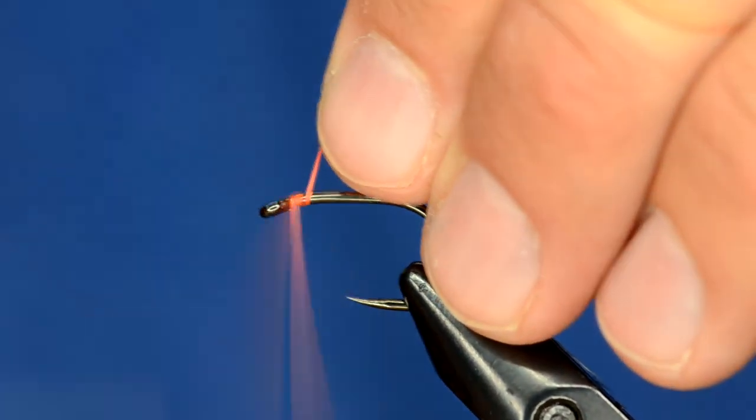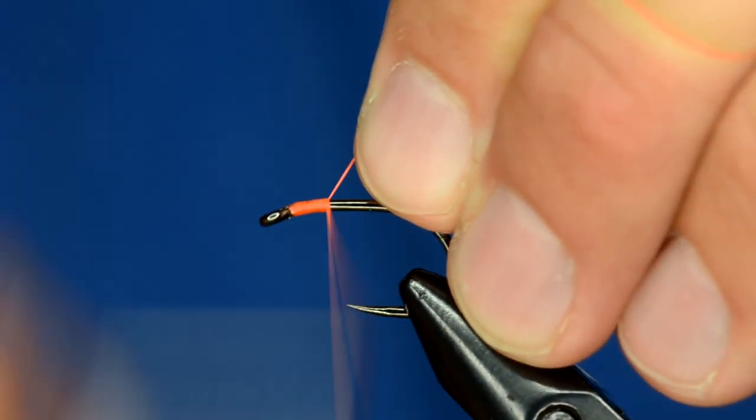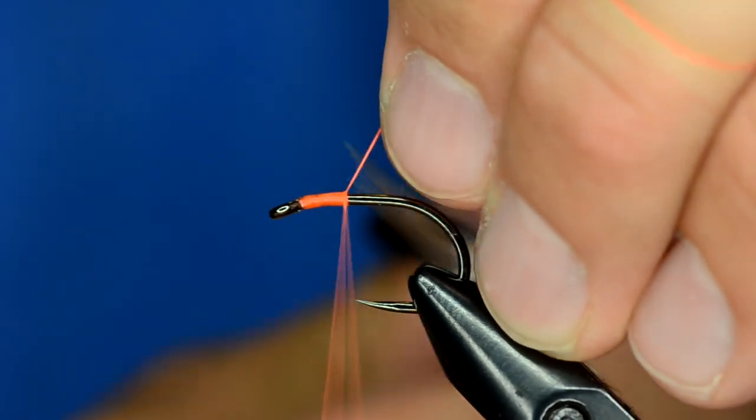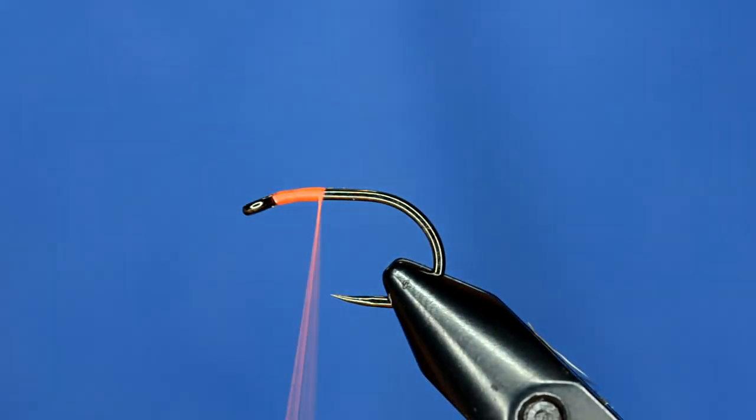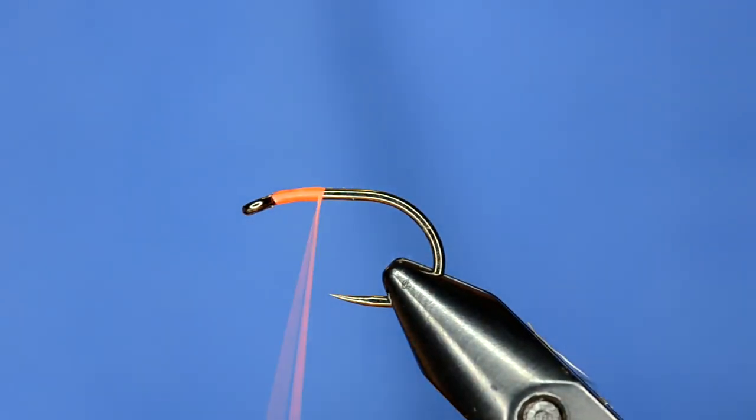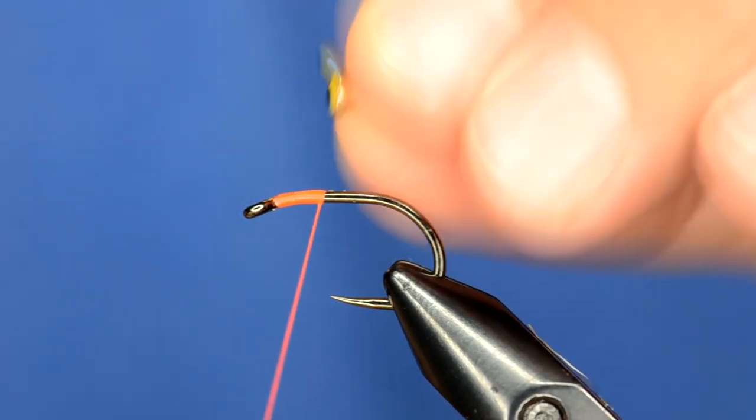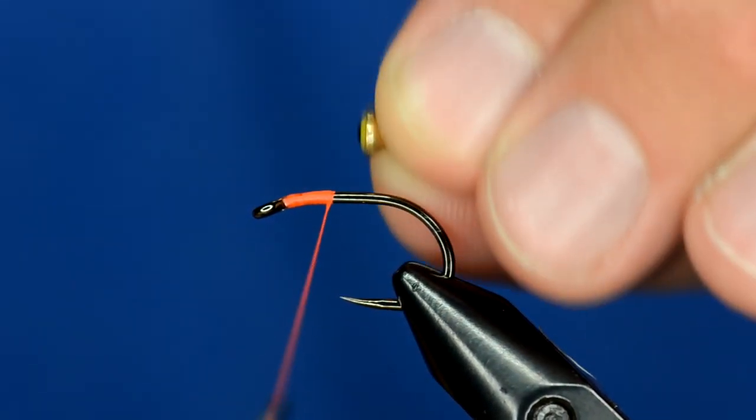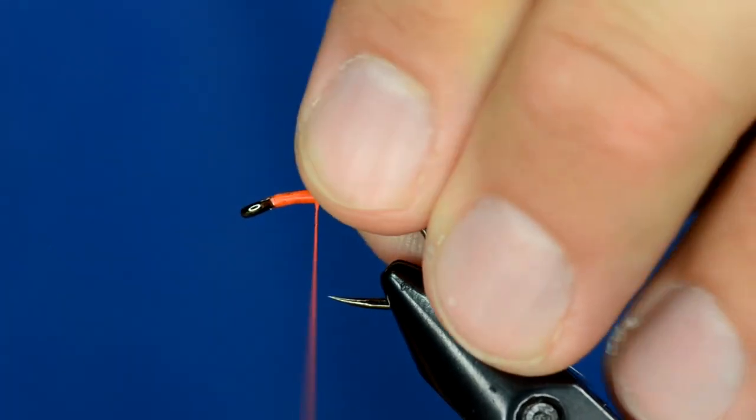All right, anyway, we're just going to dress the hook, only to about there. And I'm going to attach some Alan barbells with eye. This is the four millimeter size.